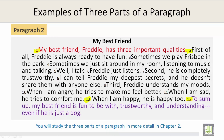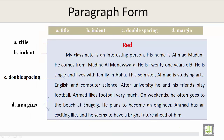You will study the three parts of a paragraph in more detail in Chapter 2. Paragraph form: each paragraph has different and various forms. Part A is the title. Part B is where you indent. Part C is double spacing. And Part D is the margin. The title is read at the top. Do you notice a space here in the first sentence? This is B — indent. The space in between sentences is double spacing, and the margins run along the side of the paper.